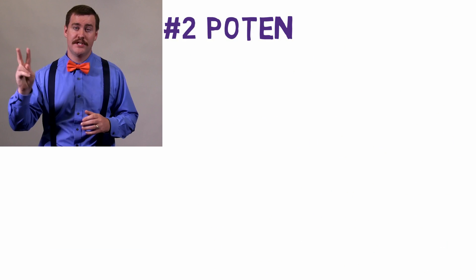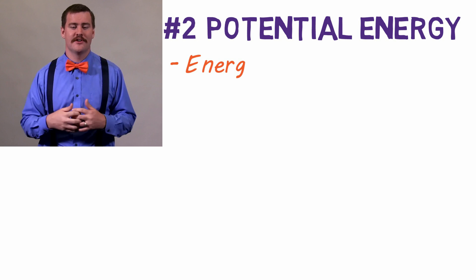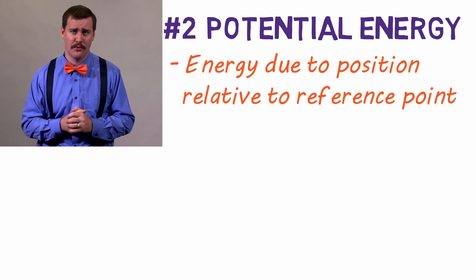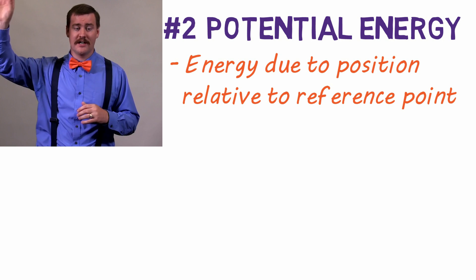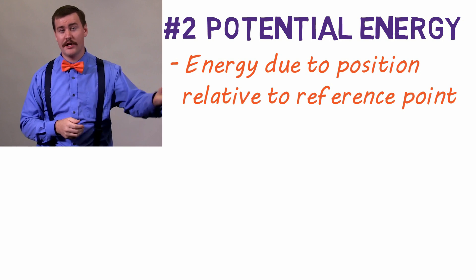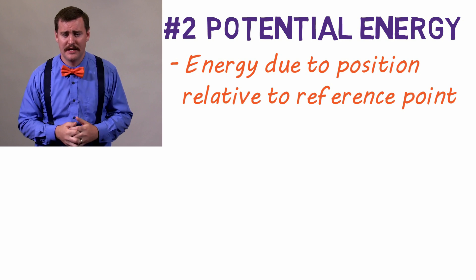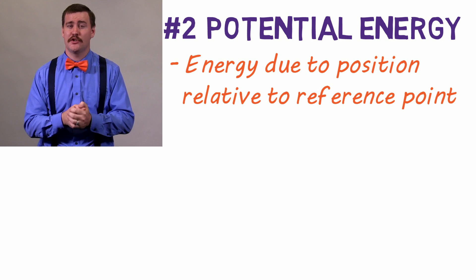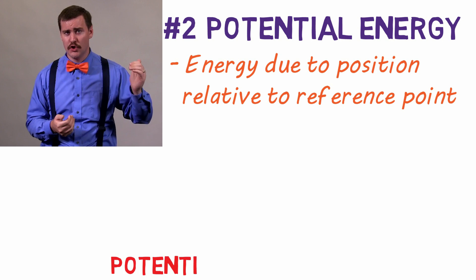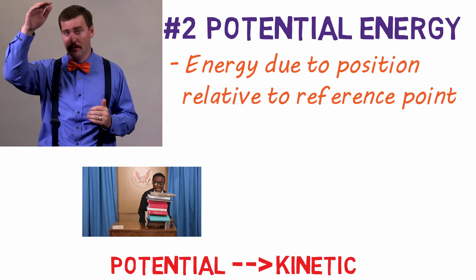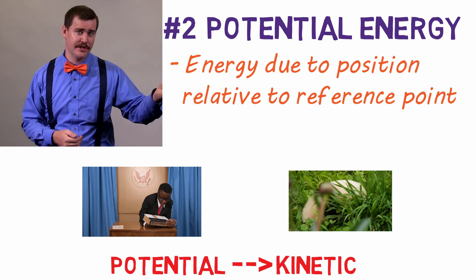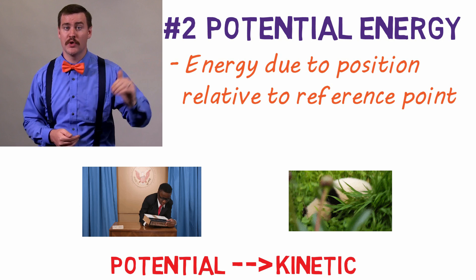Number two is potential energy. This is the energy that an object has due to its position relative to some reference point. So a book set on a shelf has potential energy, and a ball at the top of a hill has potential energy. In both cases they have potential energy because it can be easily converted to kinetic energy — if the book falls off the bookshelf or the ball rolls down the hill, we're taking that potential energy and converting it to kinetic energy.